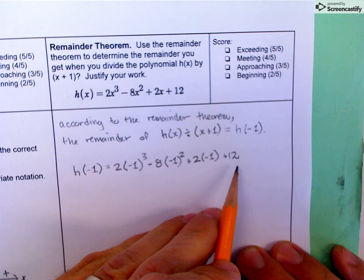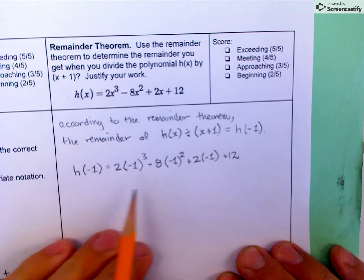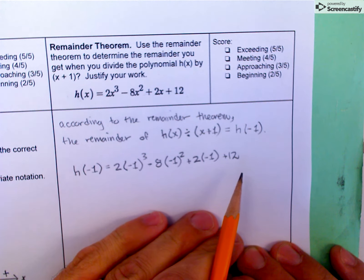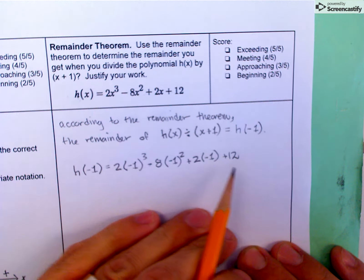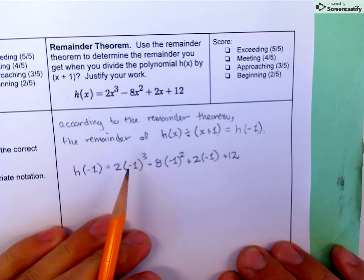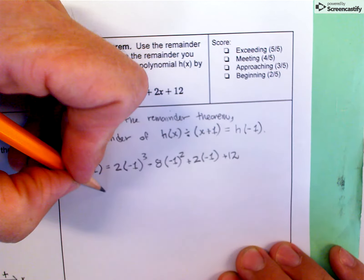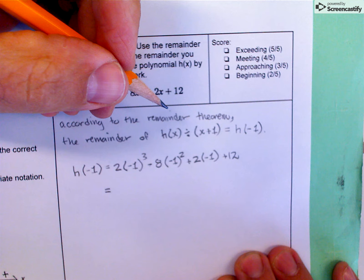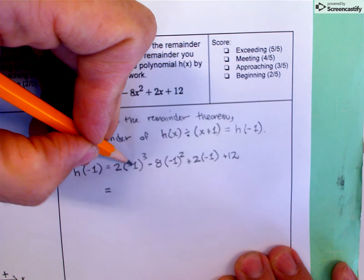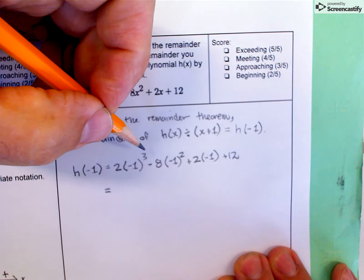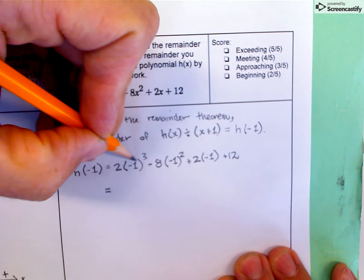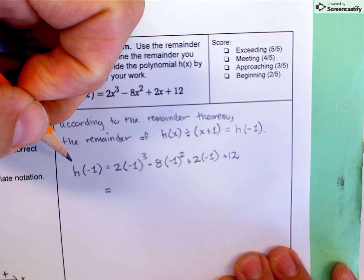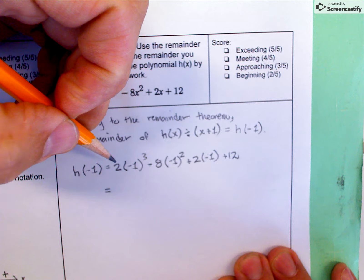I'm going to take my time with this computation because it's not hard, but you don't want to drop a negative sign or make a computation error. Let me begin using the order of operations. There's actually no math to do inside these parentheses—I'm just using those to enclose my x value. So I'll do exponents.